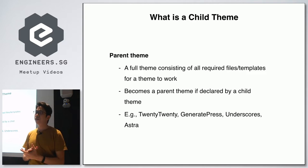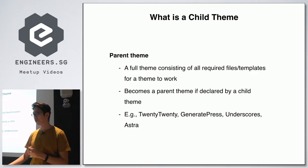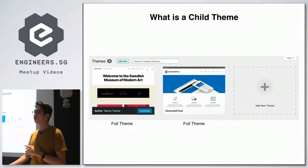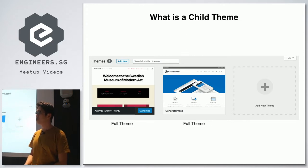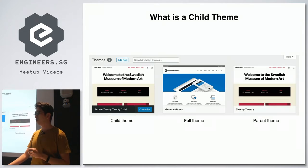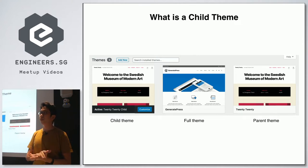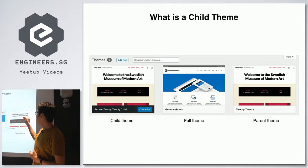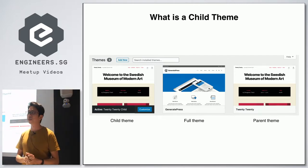All full themes can actually be transformed into a parent theme when you are using a child theme. For example, if I have the Twenty Twenty and GeneratePress themes installed — these two are considered full themes because there isn't any child theme created. But if I create a child theme based on Twenty Twenty, that Twenty Twenty theme will automatically be regarded as a parent theme, while GeneratePress remains a full theme.